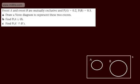Let's have a look then. Event A and event B are mutually exclusive and the probability of A is 0.2 and the probability of B is 0.5. Draw a Venn diagram to represent the two events. We need to find the probability of A union B and find the probability of A not or A dashed or the complement of A intersection B dashed or B not or the complement of B.